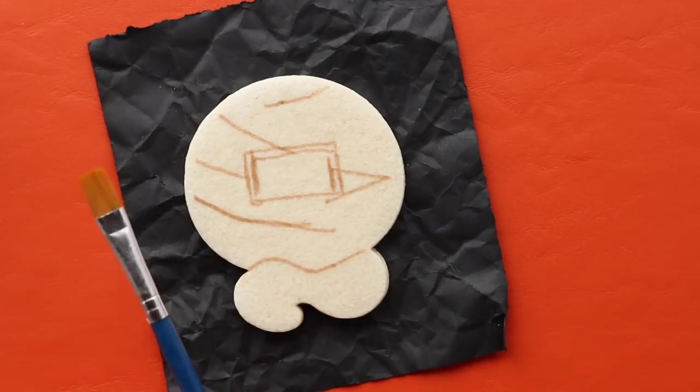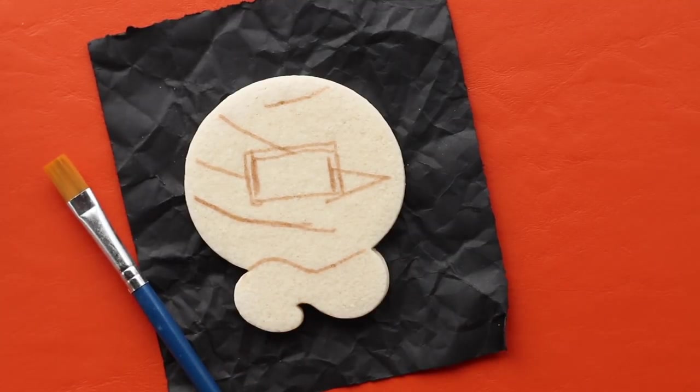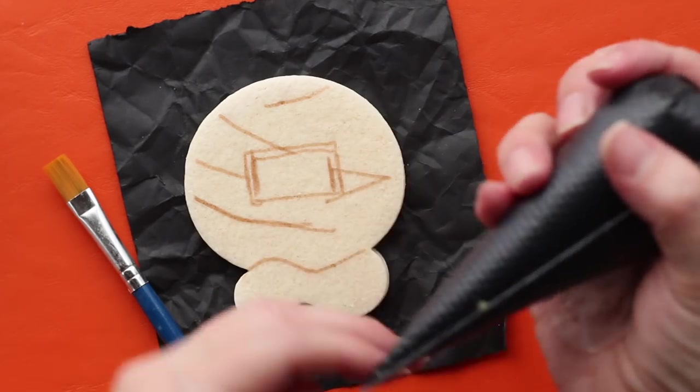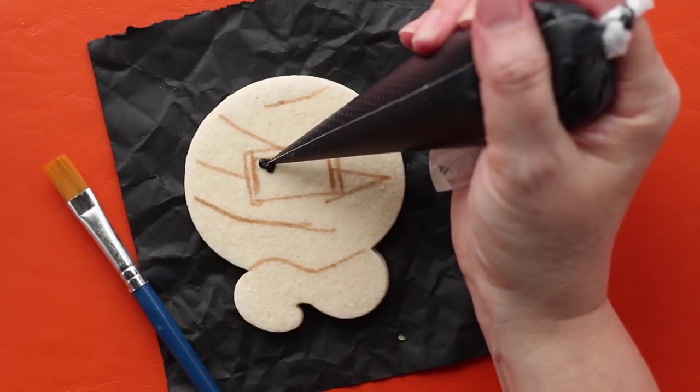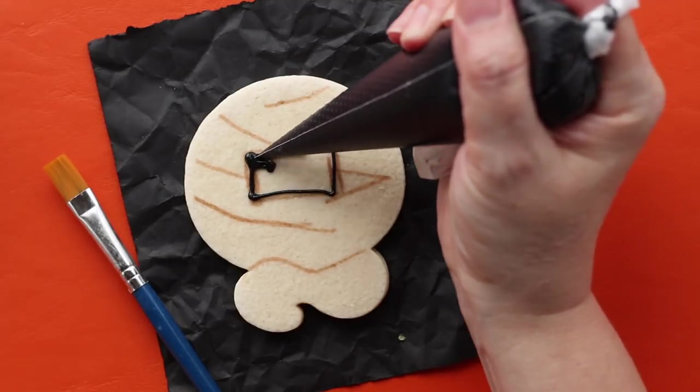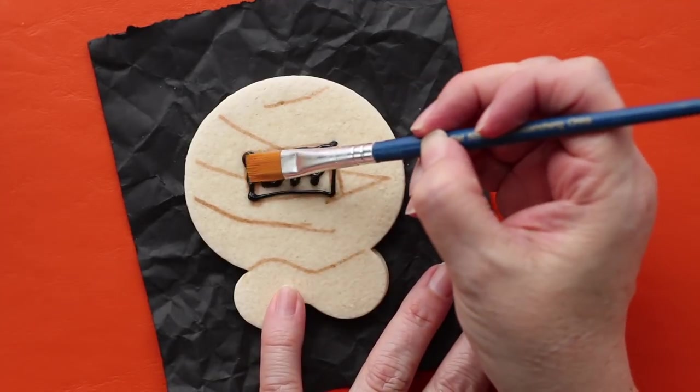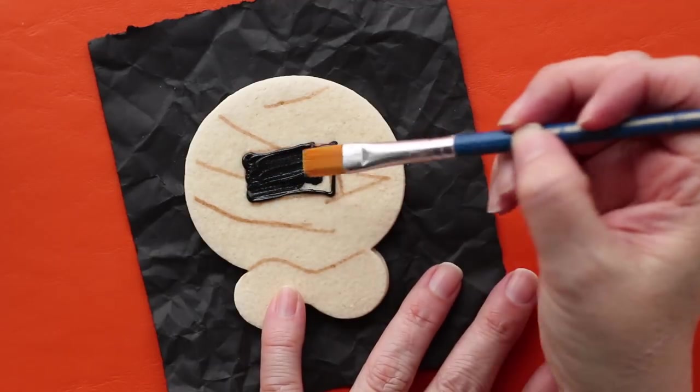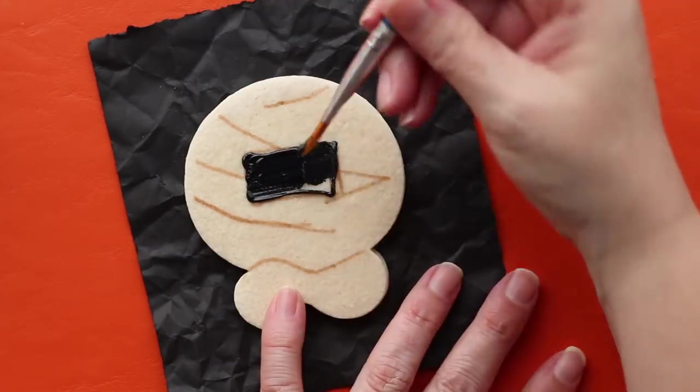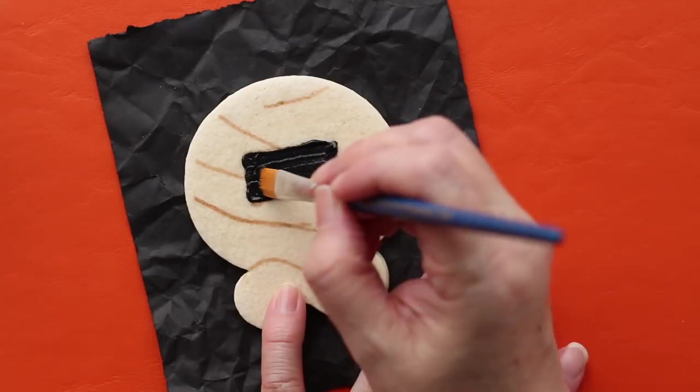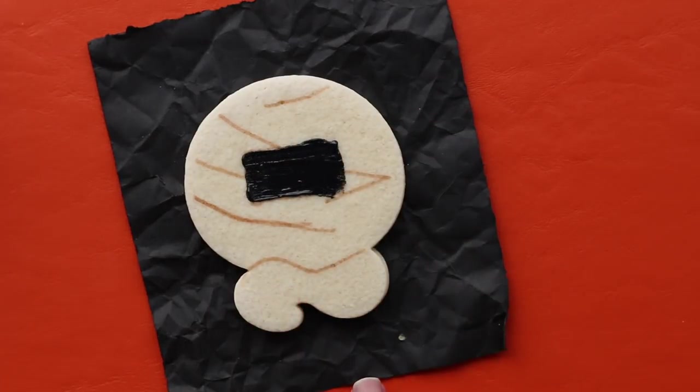What we're going to need is our cookie with our pattern on it, a paintbrush, and some black icing. So we'll let this dry for a few minutes and once it dries we'll come back and add some white. We'll add a little white to our mummy.